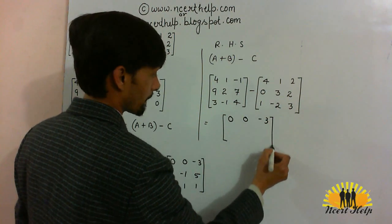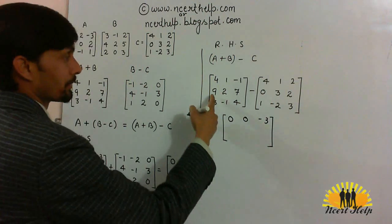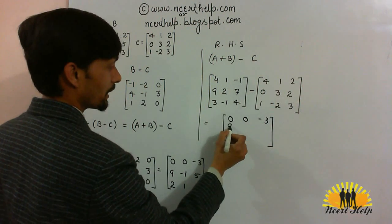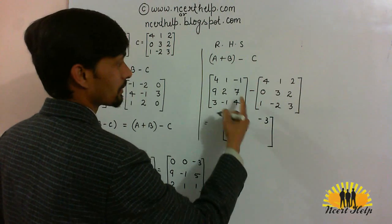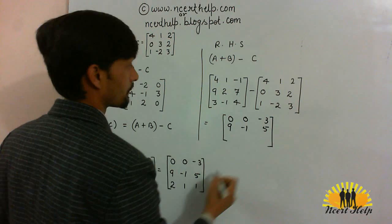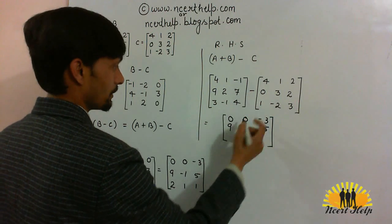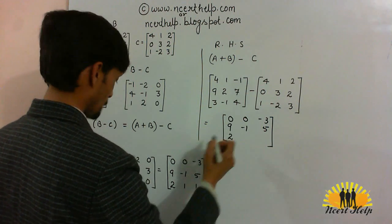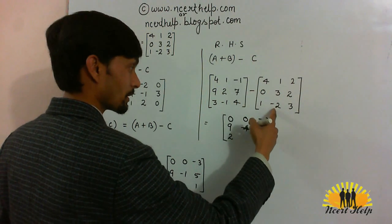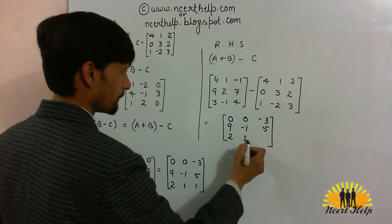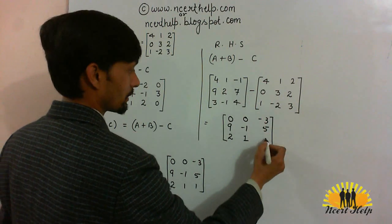9 minus 0, 9. 2 minus 3, minus 1. 7 minus 2, 5. 3 minus 1, 2. Minus 1 minus minus 2, plus 2. So, it will be 1 and 4 minus 3, 1.